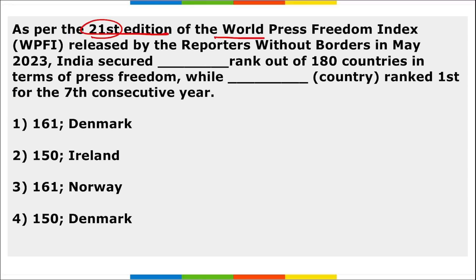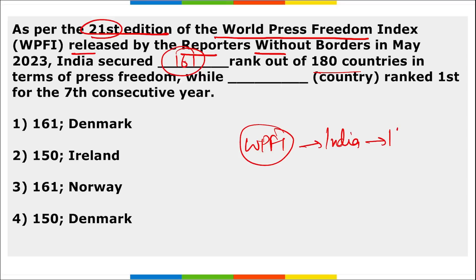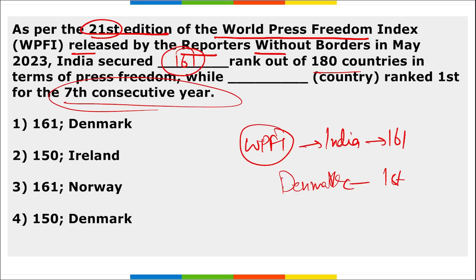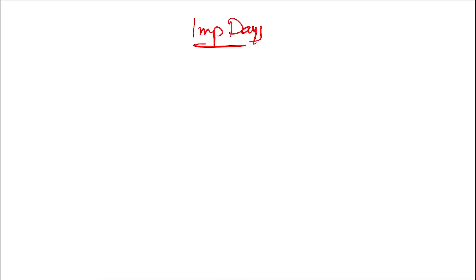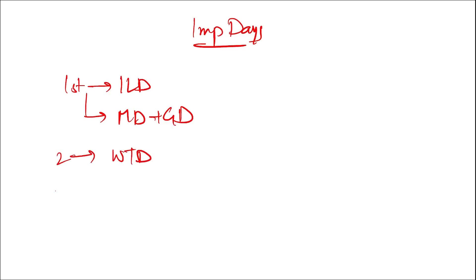As per the 21st edition of the World Press Freedom Index released by Reporters Without Borders in May, India secured the 161st rank out of 180 countries. Denmark ranked first, and this is the seventh consecutive time Denmark has secured the first position. The 3rd of May is observed as World Press Freedom Day.